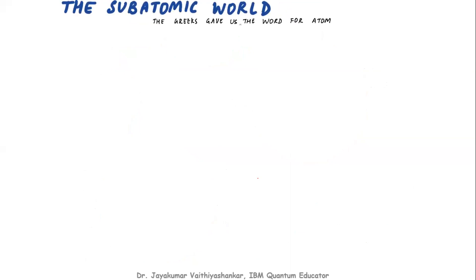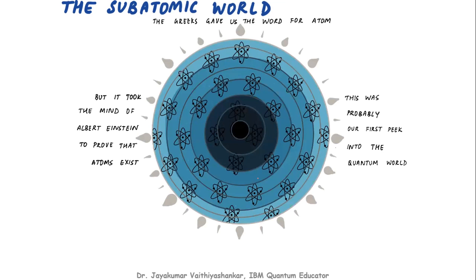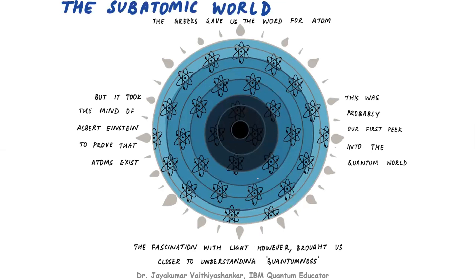We have to look at the subatomic world because we are looking at the quantum level. The Greeks gave us the word for atom. This is our first peek into the quantum world. We can observe many subatomic particles: electrons, neutrons, nuclei, protons, ions. This makes the subatomic world, which is the basis for quantum. Whatever we study about the nature of quantum particles, we are going to describe their behavior as quantumness.